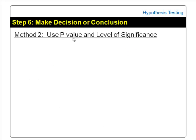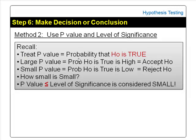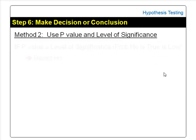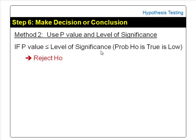Method 2 is easier and simply compares the p-value with the level of significance alpha. Recall that we treat p-value as the probability that the null hypothesis is true. Large p-values mean that probability is high, so we accept the null hypothesis. Small p-values mean that probability is low, so we reject. A p-value smaller than or equal to alpha is considered small. If p-value is less than or equal to alpha, we reject the null hypothesis; otherwise, we accept it.